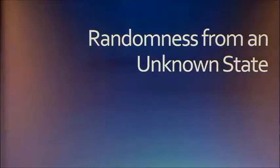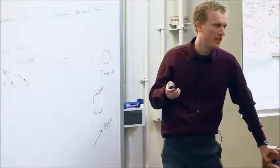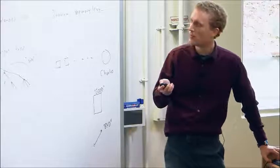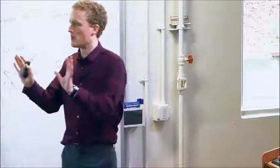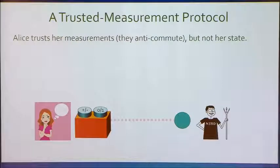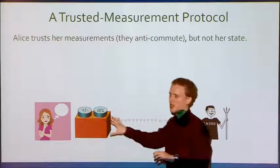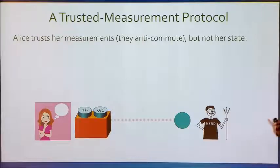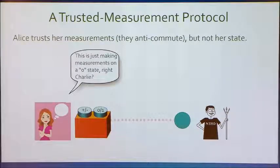The second part — I'll go through a little more quickly — is where we exploit the trusted measurements to get randomness from an unknown state. In this case we don't know anything about the state; we can only control the measurements and somehow have to get randomness from that state. I'll set up a new protocol which is a variant of the one we looked at before. The basic idea is we now assume that Alice has the ability to perform completely trusted measurements — because we know we can at least do that in a noisy fashion — so we go all the way and assume she can do perfectly trusted measurements.